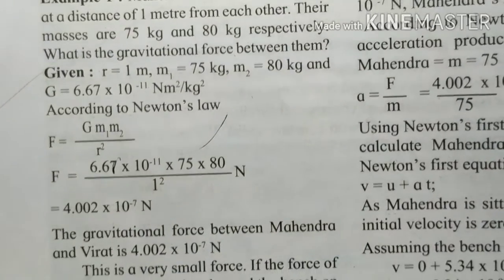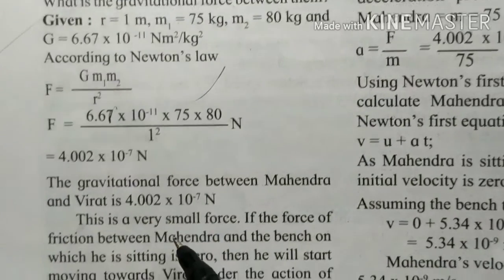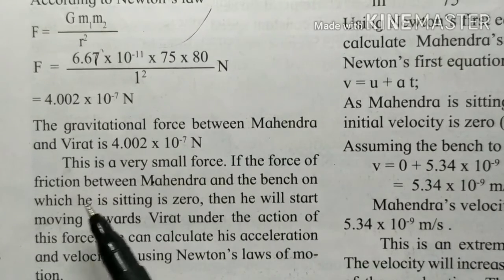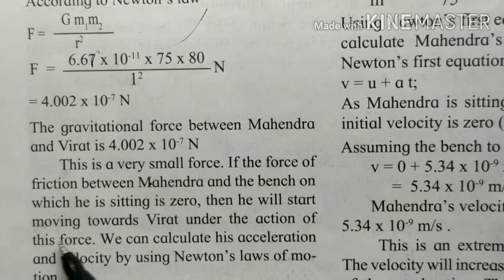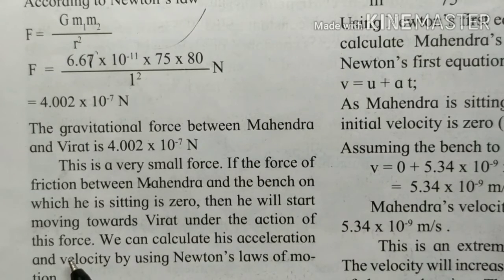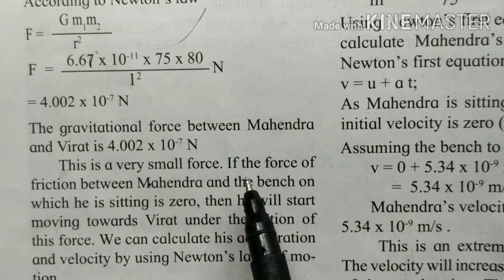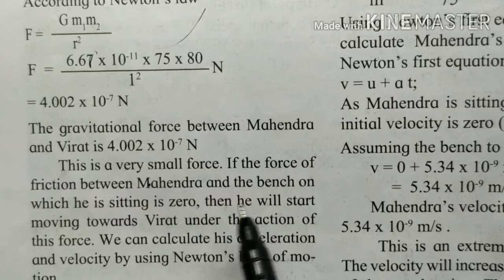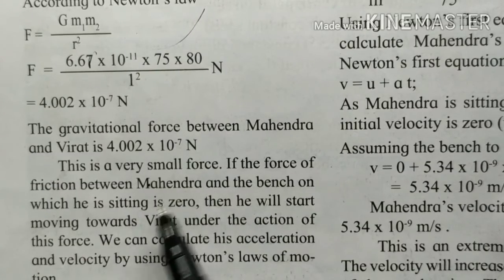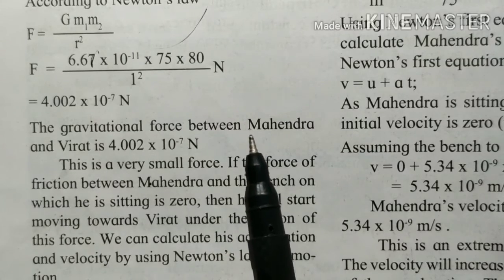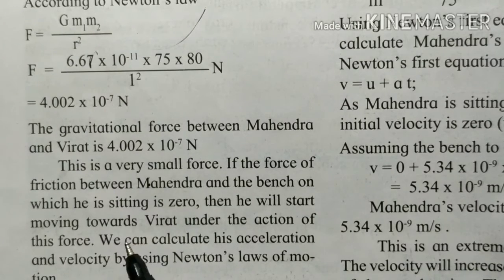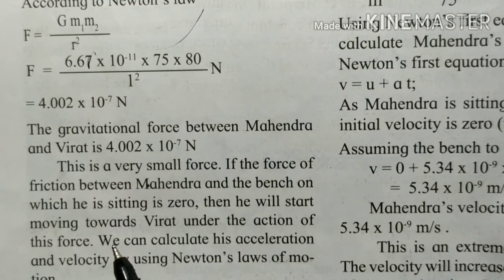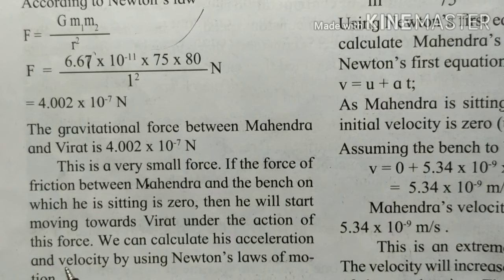The gravitational force between Mahindra and Virat is approximately 4.0 × 10⁻⁷ N. This is a very small force. If the friction between Mahindra and the bench on which he is sitting were zero, he would start moving toward Virat under the action of this gravitational force. We can calculate the acceleration and velocity using Newton's law of motion.